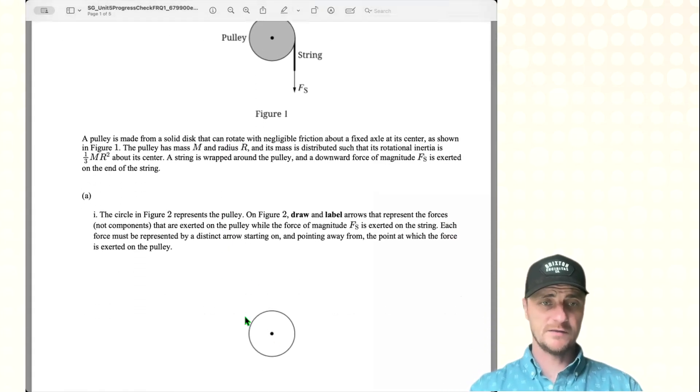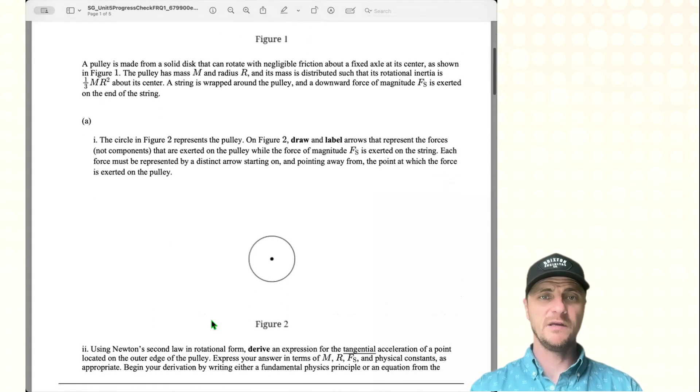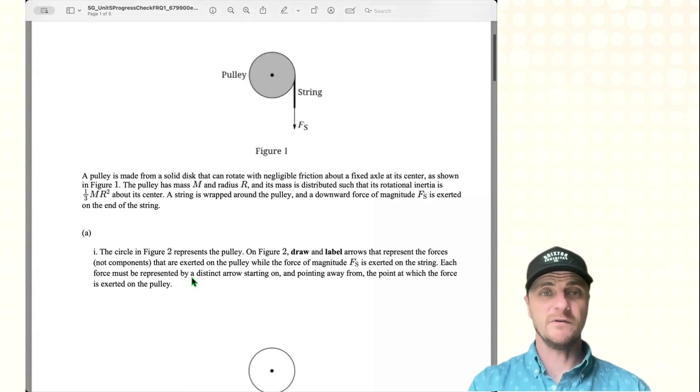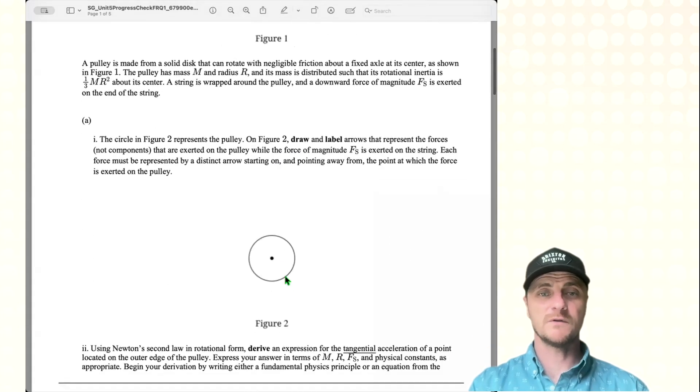So for part A, this circle in figure 2 represents the pulley. On figure 2, draw and label arrows that represent the forces, not components, that are exerted on the pulley while the force of magnitude FS is exerted on the string. Each force must be represented by a distinct arrow starting on and pointing away from the point at which the force is exerted on the pulley. And looking at that pulley, I can see 3 forces. Now one of them was already given, right? We have FS, this pulling force, that's exerted right here. So we're going to draw that one in, but while I go over to the paper, I want you thinking, what are the other 2 forces?